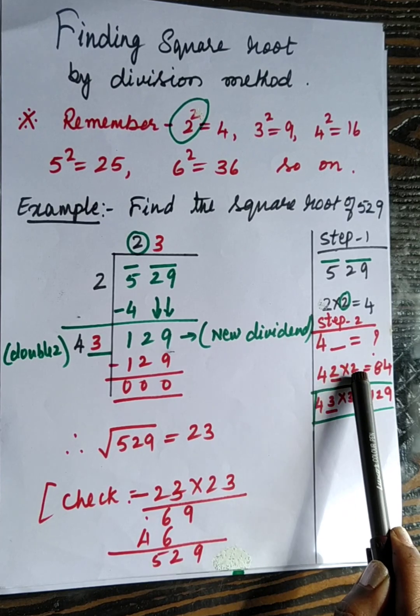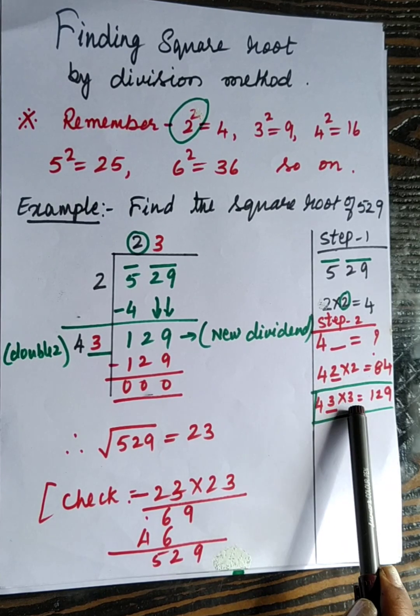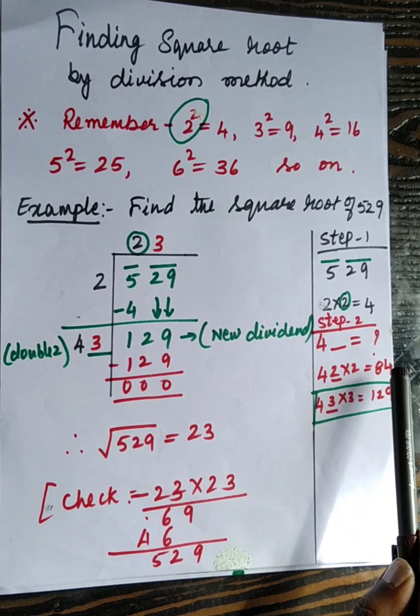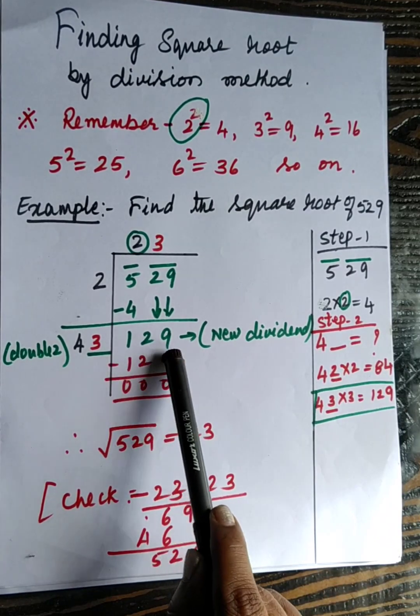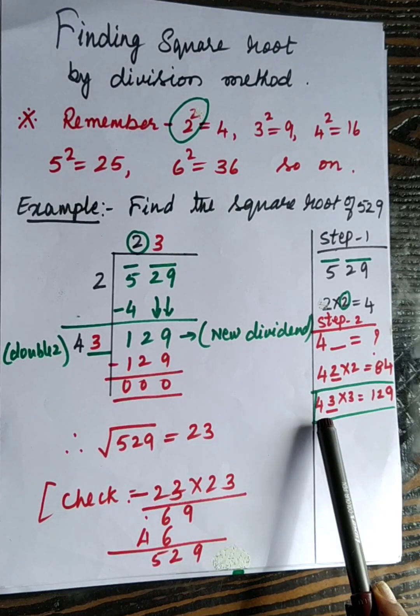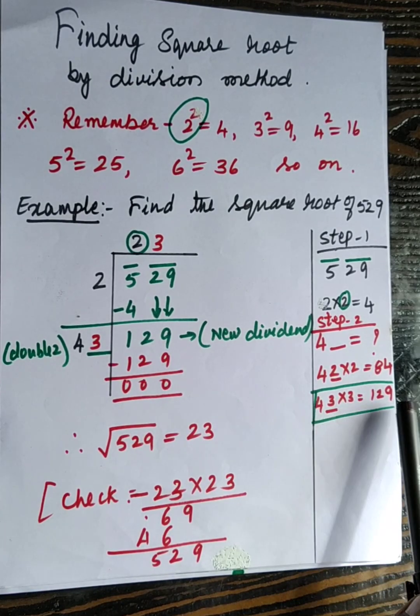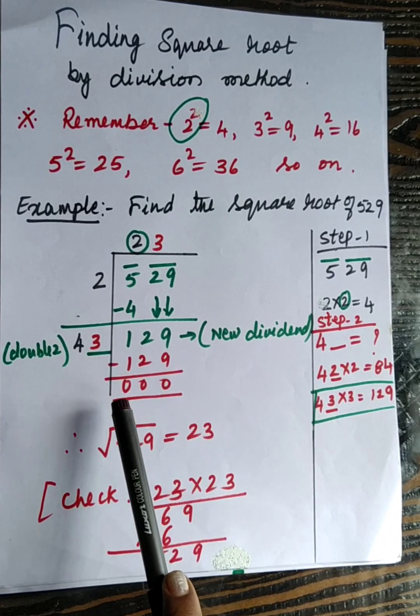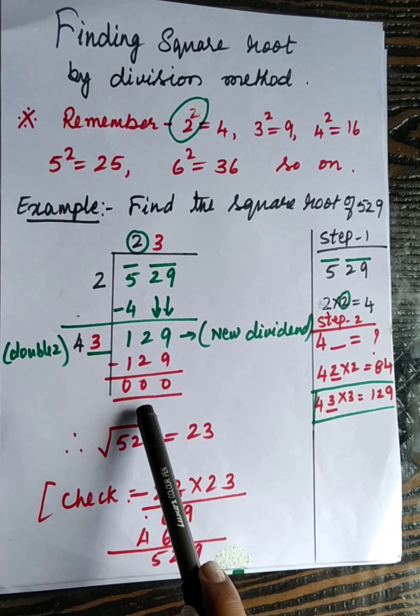If you take 2 here, here also there should be 2. If you take 3 here, here also there should be 3. 42 into 2 is 84. 84 is too smaller than 129. So try next number, 43 into 3. 43 into 3 is 129. So when you subtract you will get 0.